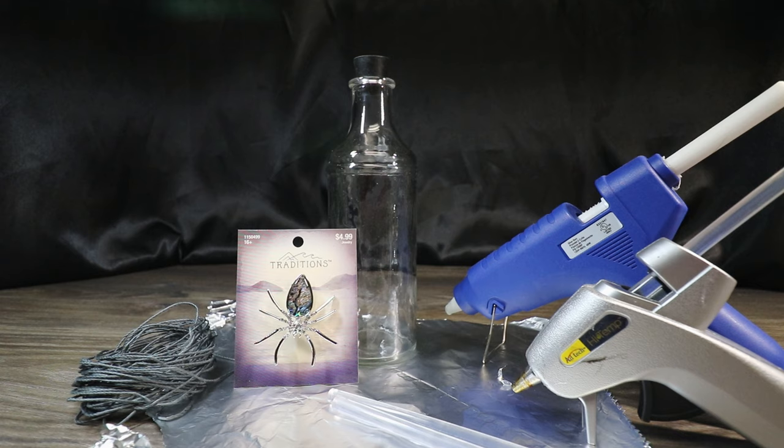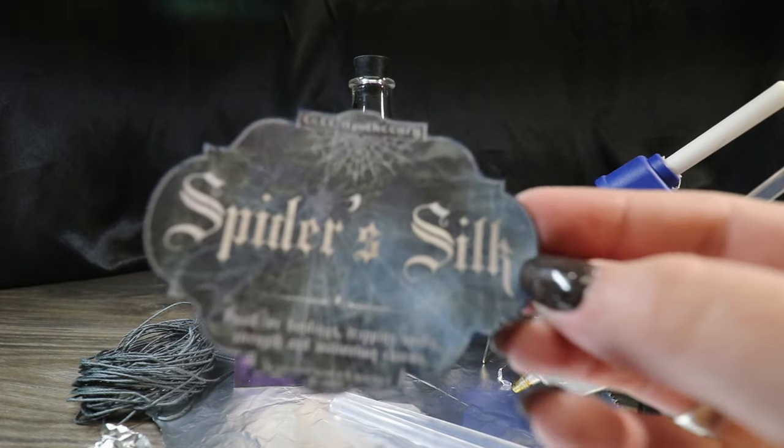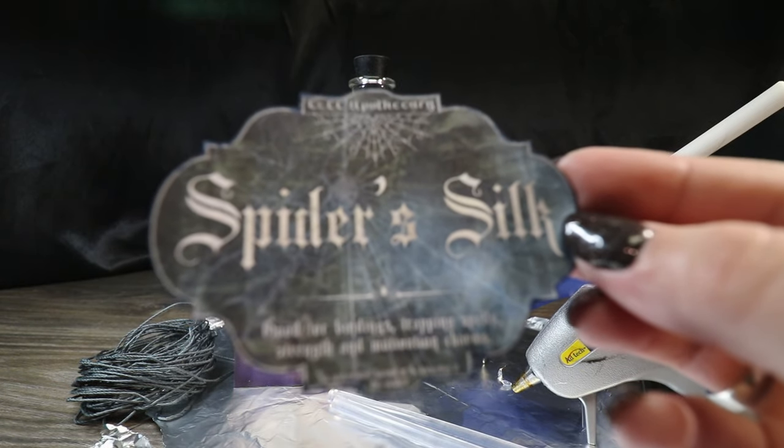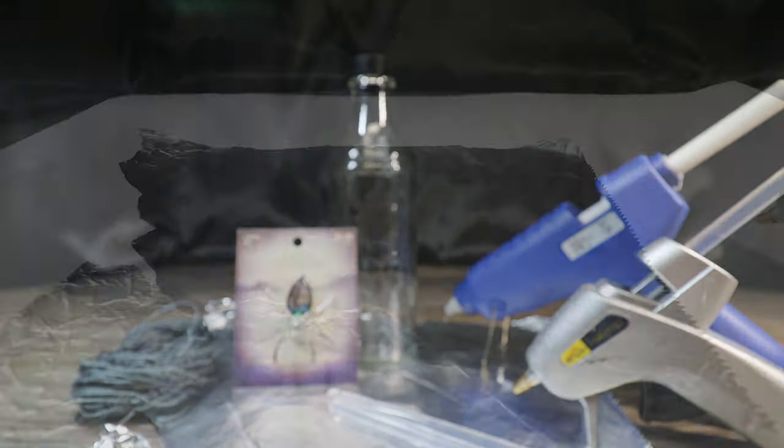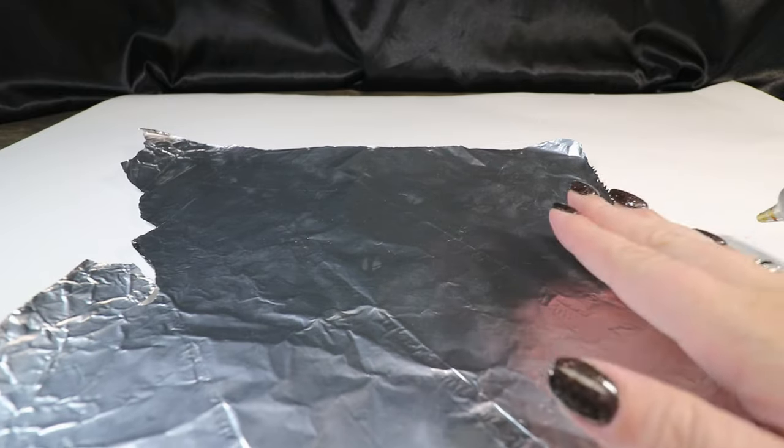You may want a cooking skewer or something to help you put the spider silk into the bottle, as well as our label printed on sticker paper. And the link for this is in the description down below. Let's get started.